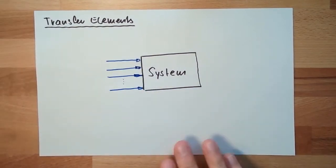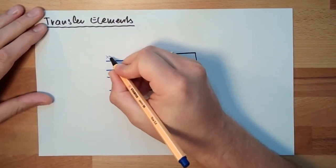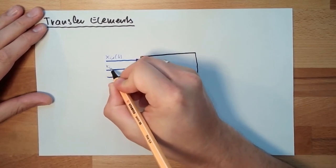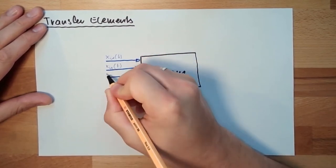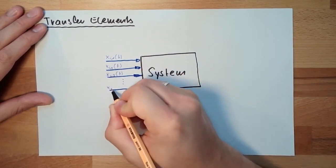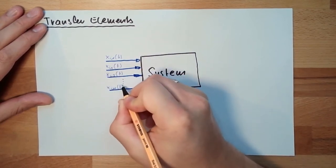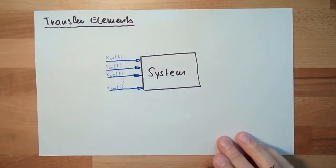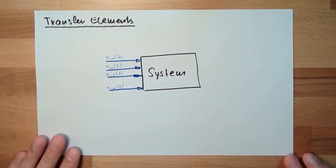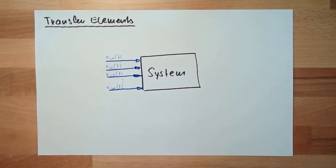I will name them Xi1, Xi2, Xi3, and Xin. And they all might depend on time. They don't need to be constant, they might vary somehow. And if something is going inside the system, something else is coming out.